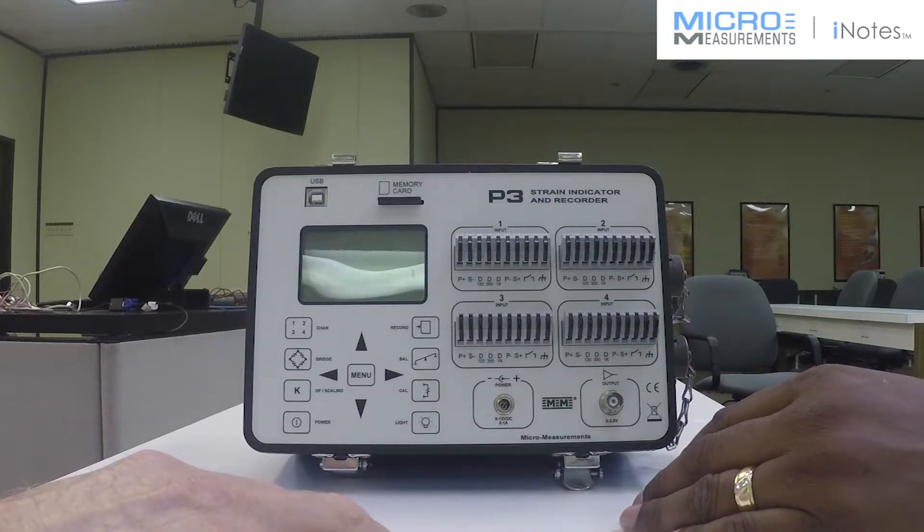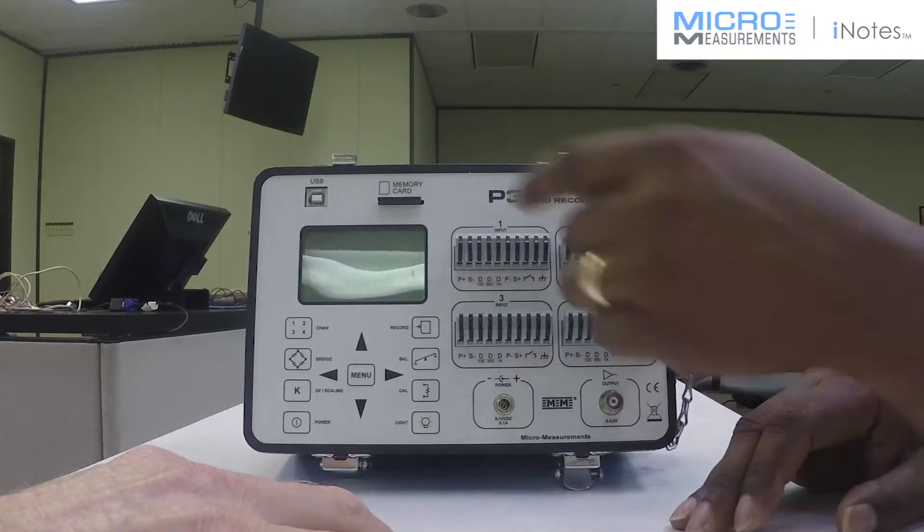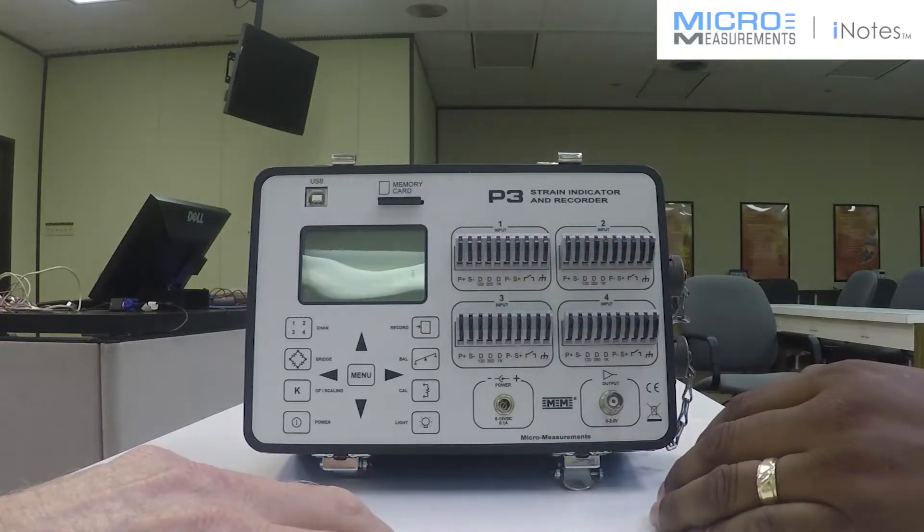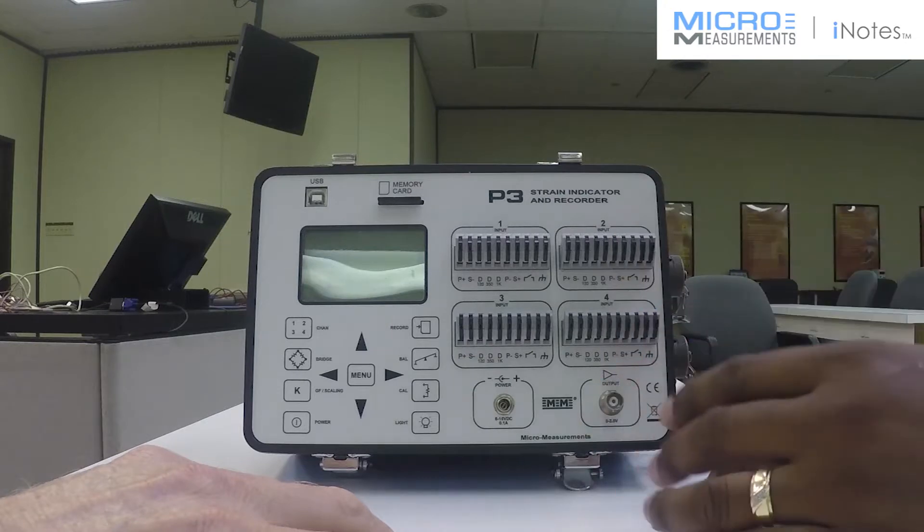Okay, how's the data stored on this? Well, there are two ways to store the data. You can store it with the memory card as shown here, or you can use the USB slot that we have on the other side, and that will transmit the data from the box to the PC directly.